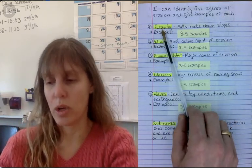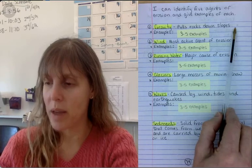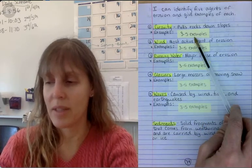So here is an agent of erosion: gravity. Gravity pulls rocks down slopes. That's what it does. You're going to list three to five examples here.